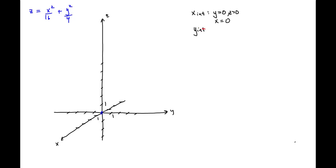The y-intercept is given by setting x equals zero and z equals zero, which also gives us y equals zero — at the origin. And finally, the z-intercept is given by setting x equals zero and y equal to zero. Plugging into our equation, we get the z-intercept is also equal to zero. So we only have one intercept, and that one intercept occurs at the origin.